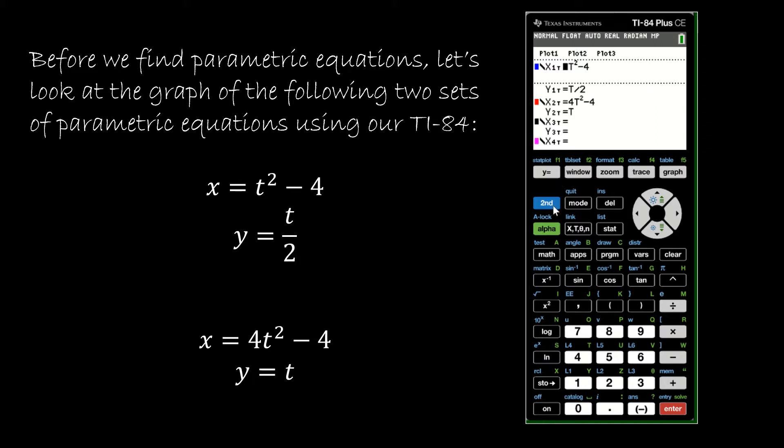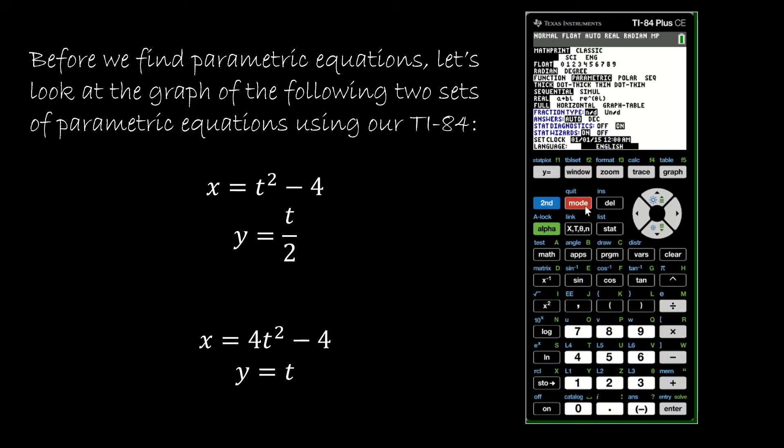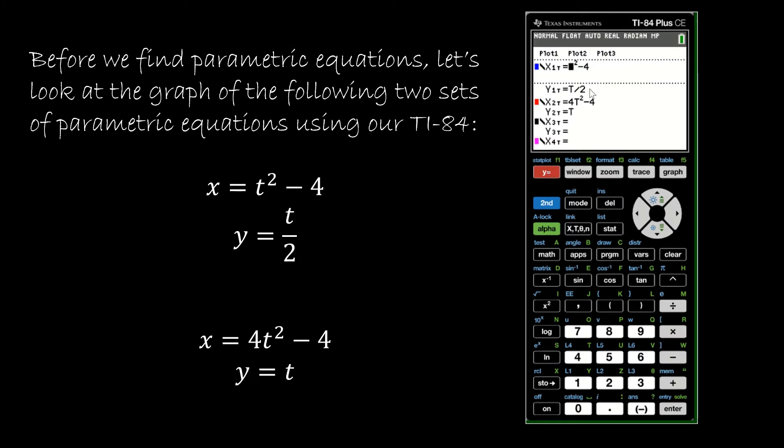So the first thing you should do is we know that our calculator has certain modes. If you click mode, as you can see, I have clicked on parametric. Typically, your calculator is on function mode, so it's going to be y1, y2 when you click y equals. When you change it to parametric mode and then you click on the y equals button,